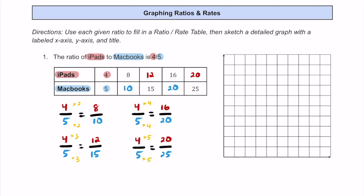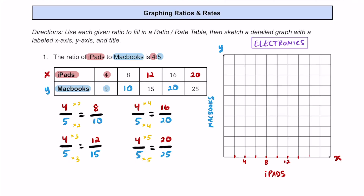Now that we've filled in the table, let's label everything on the graph. Whatever's in the first row — iPads — goes along the x-axis, and MacBooks go along the y-axis. I'm going to say every line along the x-axis is going to be 2, so the markings are 4, 8, 12, 16, and finally 20.